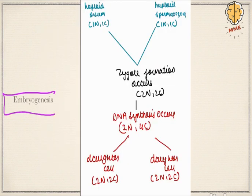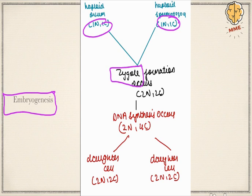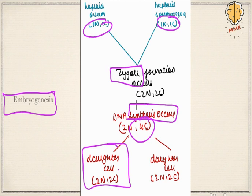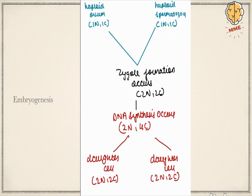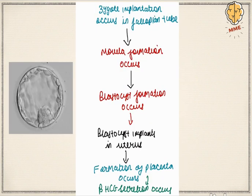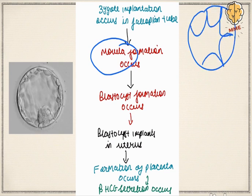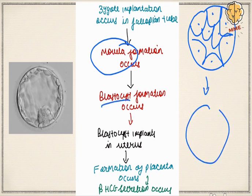Now we'll discuss embryogenesis. It is the process of fertilization when one haploid ovum and one haploid spermatozoa fuse to form the zygote. In zygote formation, DNA synthesis occurs so the chromatid material multiplies to 4C, and the daughter cell originates as 2N and 2C. Once the zygote forms, morula formation occurs as cells divide.